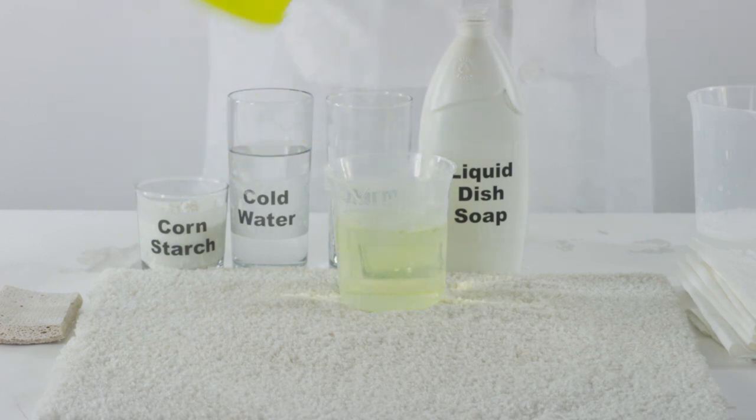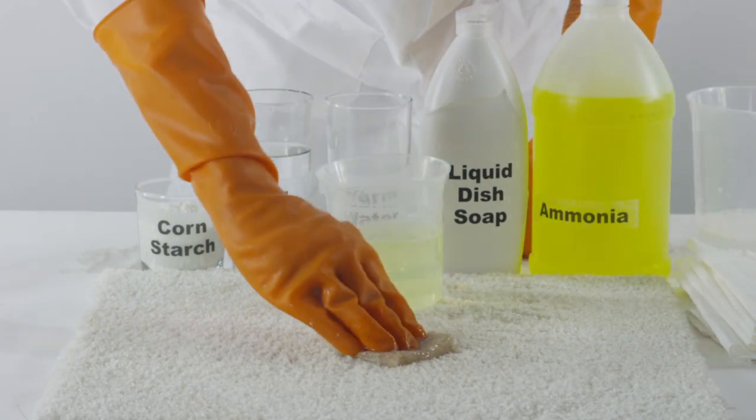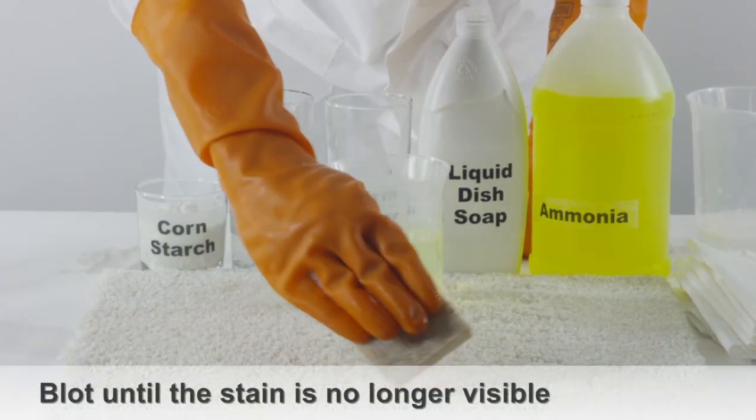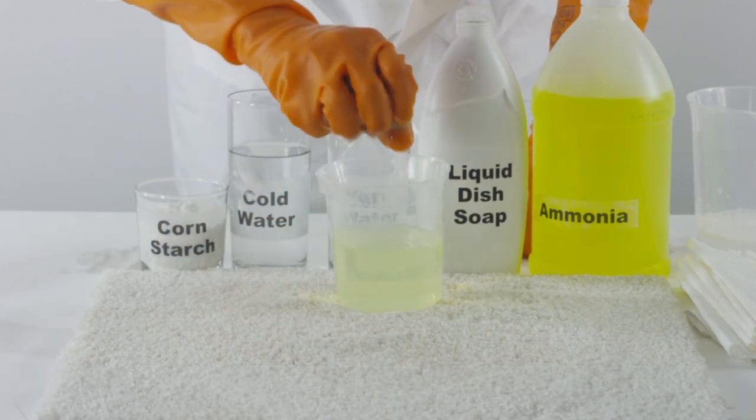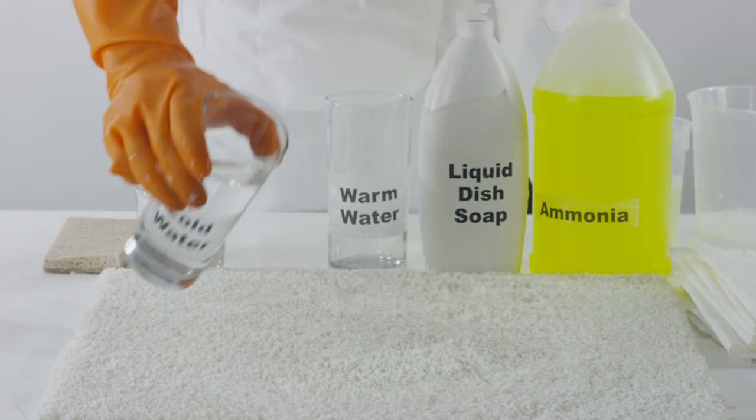With a sponge, apply the solution directly onto the stained area of the carpet. Blot the stain until the milk is no longer visible. Using a clean sponge, blot the carpet with cold water to rinse.